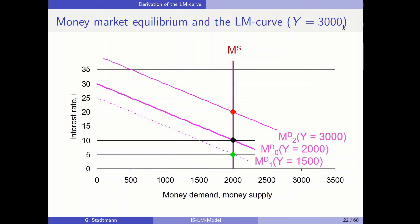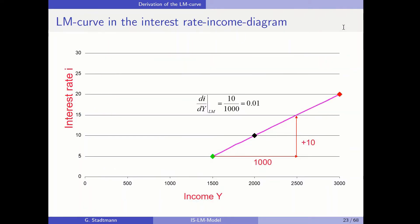What happens if GDP increases to the level of 3000? Then we are in the red scenario: the money demand curve shifts to the right, and the interest rate increases to the level of 20%. We can now use these three scenarios — the black, green, and red — and transfer these three dots into an interest rate-income diagram.